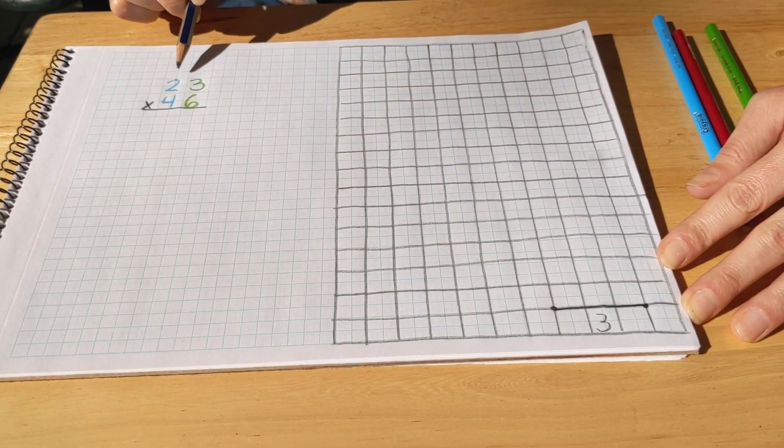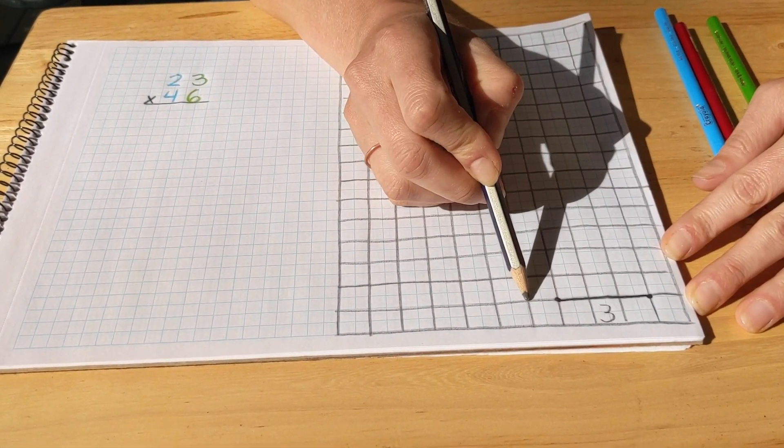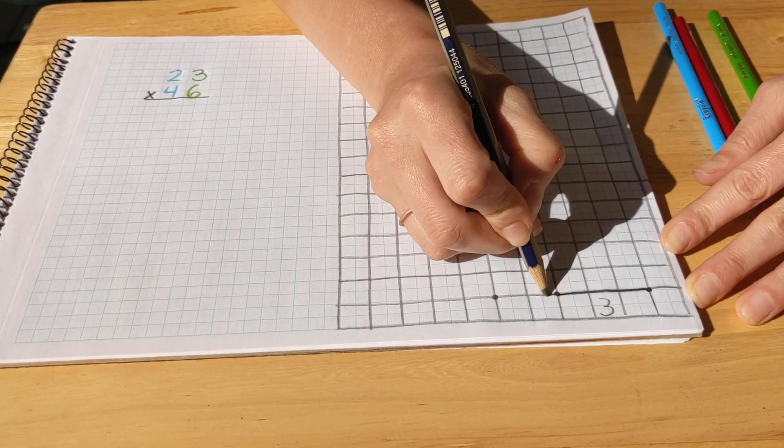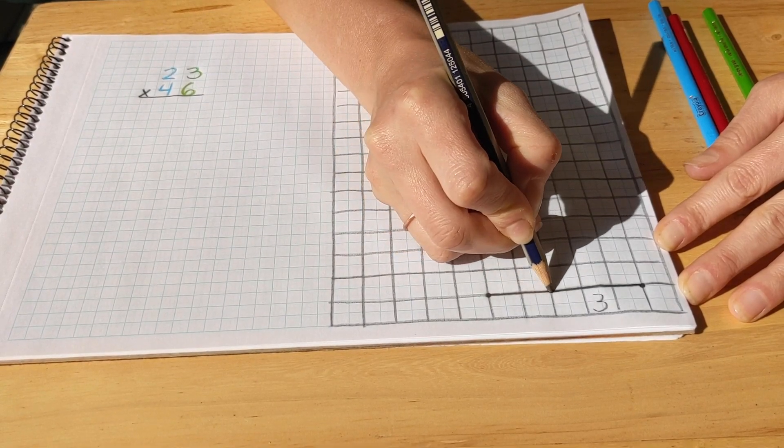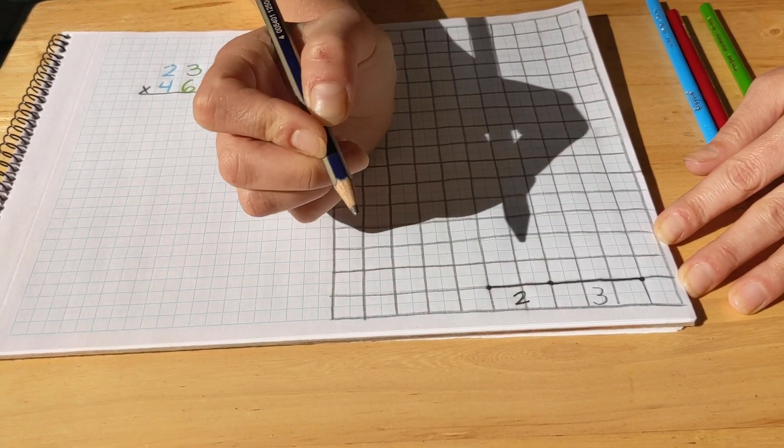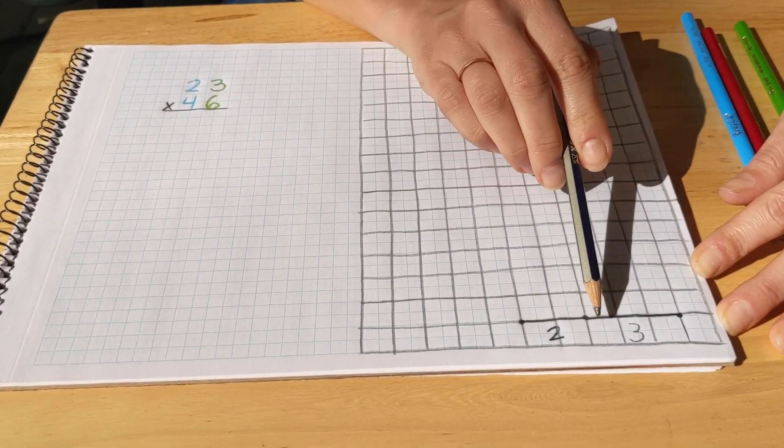And now we're going to count out our tens. So from that dot, we're going to count out two tens. One, two. And we'll put a dot there and connect those. And we'll write a two down there. So here we have 23. Two tens and three units.